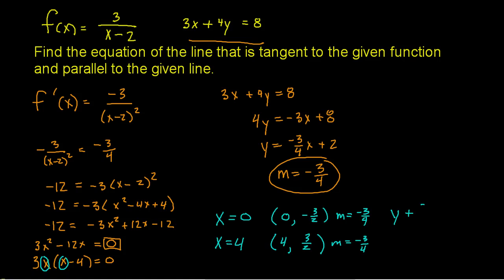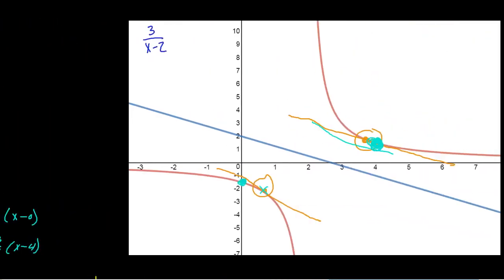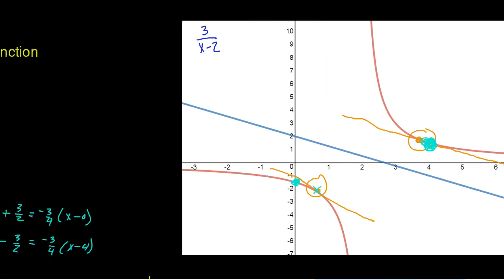With this information, I can create the equations of my two lines. The first one is y plus 3 halves equals negative 3 fourths times x minus 0. The second one is y minus 3 halves equals negative 3 fourths times x minus 4. Those are the two equations of the lines that are both parallel to the given line and tangent to my function.